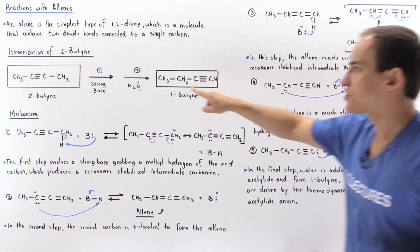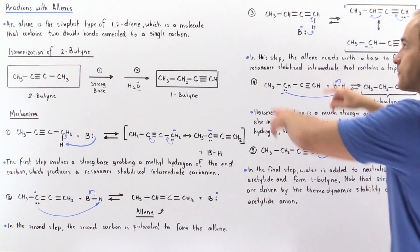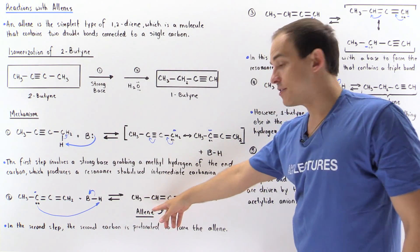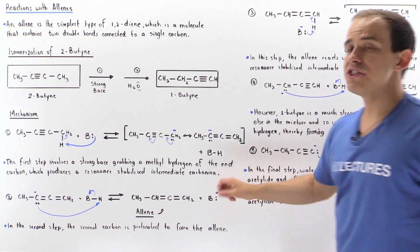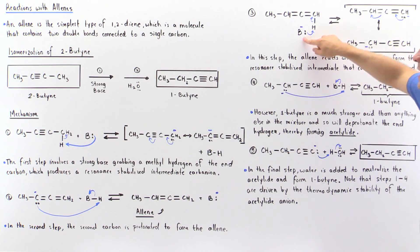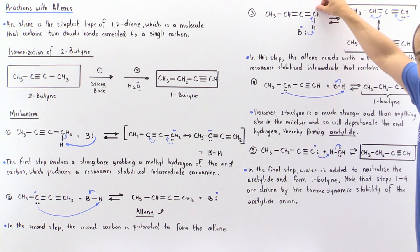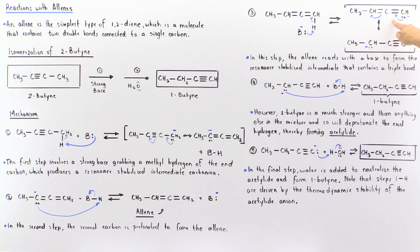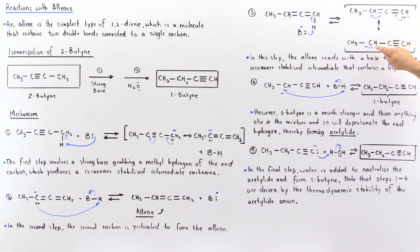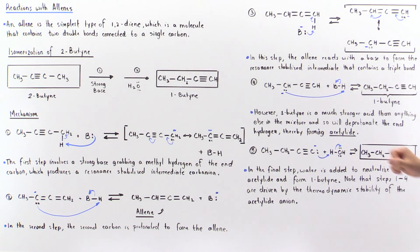In the third step, we take our 1,2-diene — the allene — and it reacts with the strong base. The base takes the H found on the end carbon that contains the double bond. Notice that the resulting lone pair of electrons can form a second pi bond — a triple bond — kicking off the adjacent pi bond and forming a lone pair on the second carbon. So in this step, we again have resonance stabilization. In step three, the allene reacts with the base to form a resonance-stabilized intermediate that contains a triple bond.